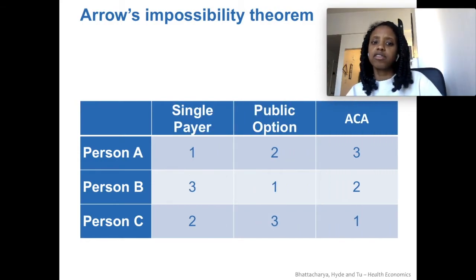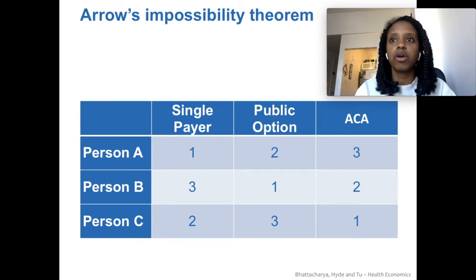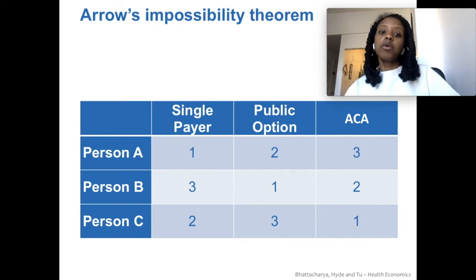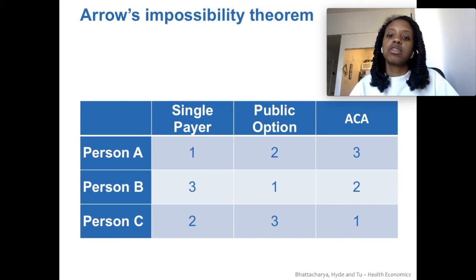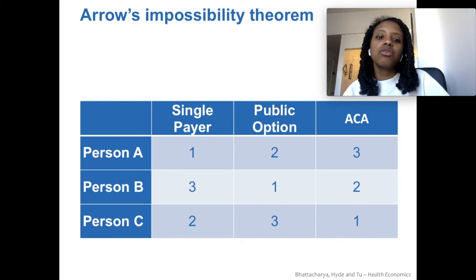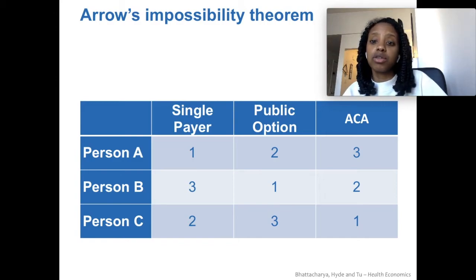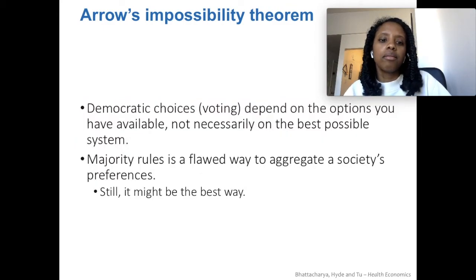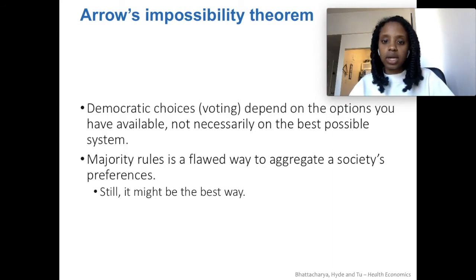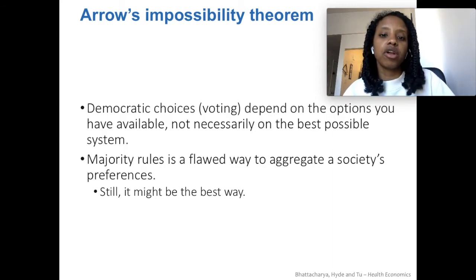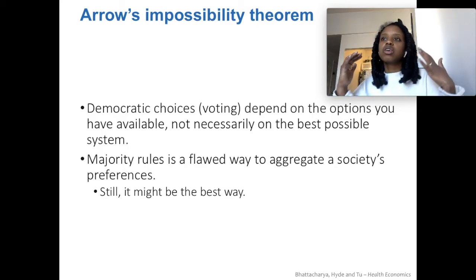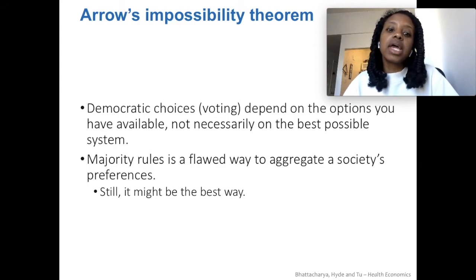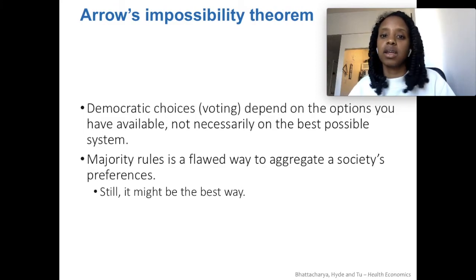You can have the same kind of problems through democratic control over any issue, and specifically over health policy. Some people might prefer single payer to the public option, or the public option to the ACA, which is the current law. But how do you know which one is the first best, second best, and third best for everybody overall? It's really difficult to find out. Democratic choices — meaning voting — depend on the options you have in front of you and not necessarily on the theoretical conception of the best possible option, because majority rules is a flawed way of collecting all of a society's preferences.